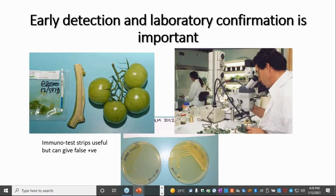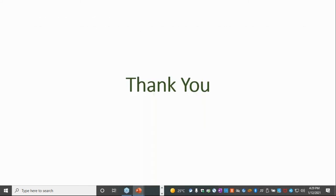Early detection and laboratory confirmation is important. Immunotest strips are useful but can give false positive reactions. That marbling of the fruit is another symptom that can be associated with bacterial canker. That's probably where I'll finish.